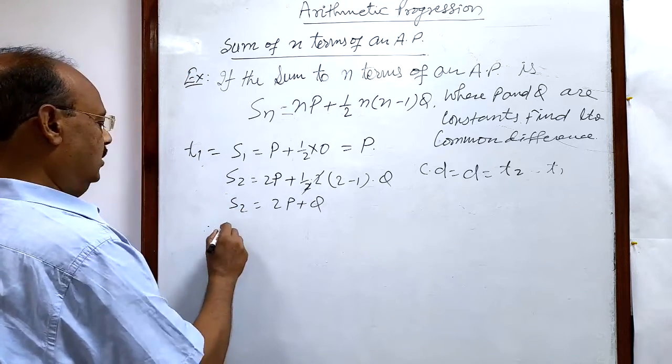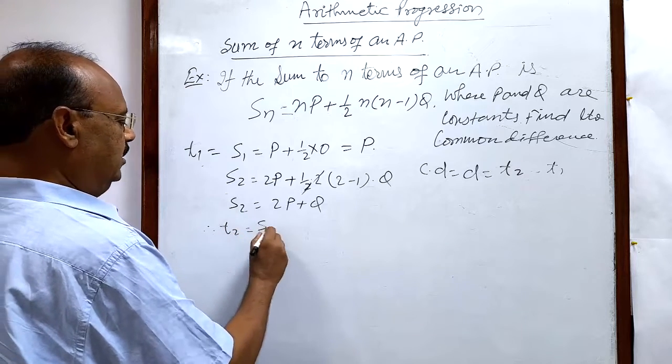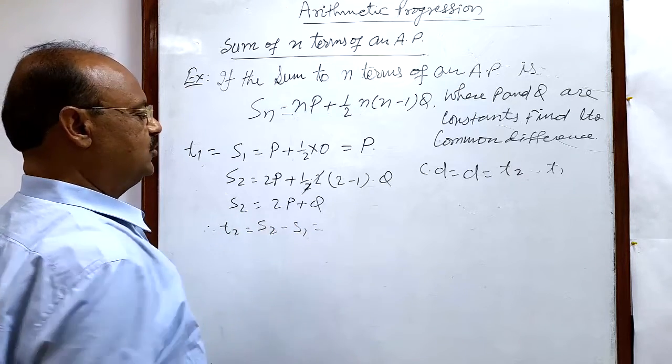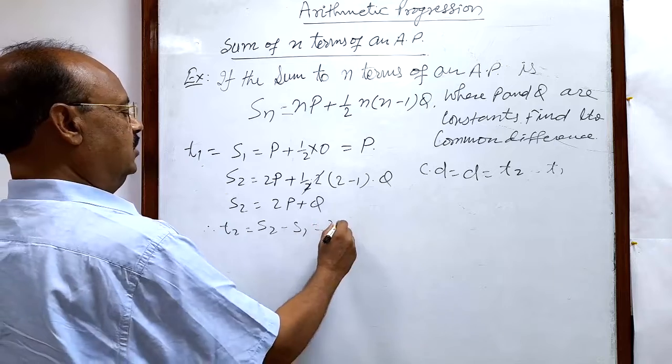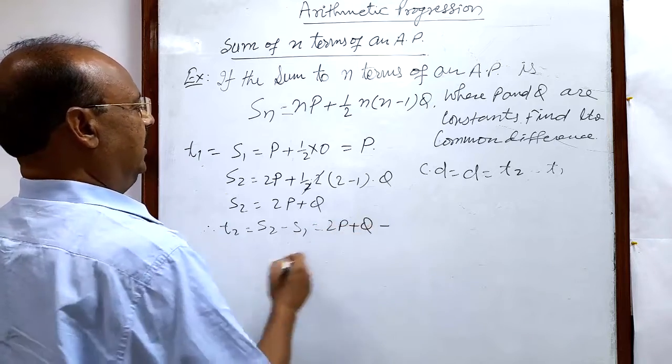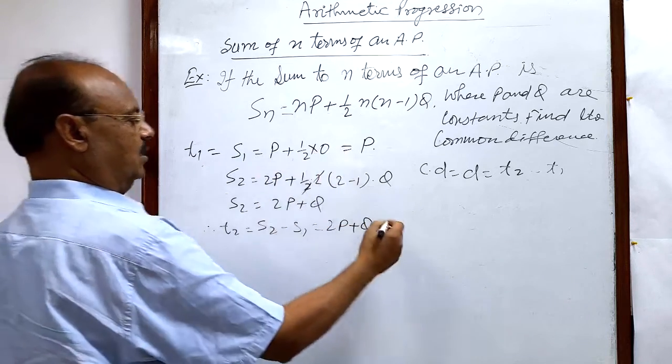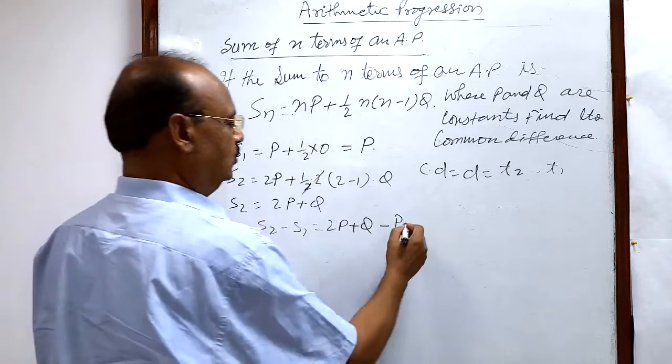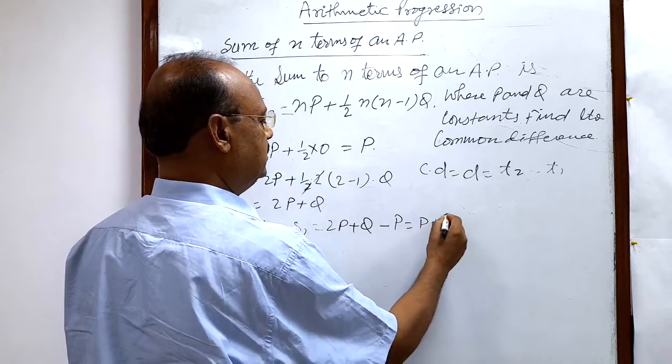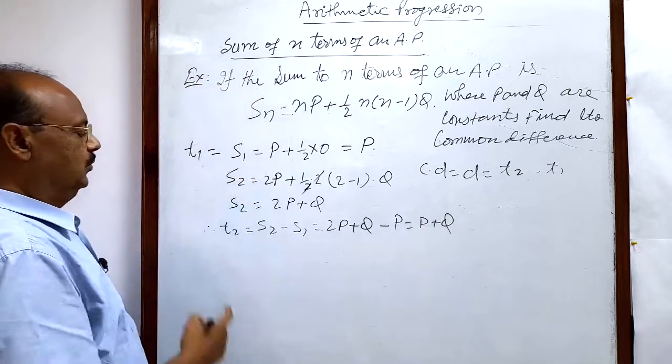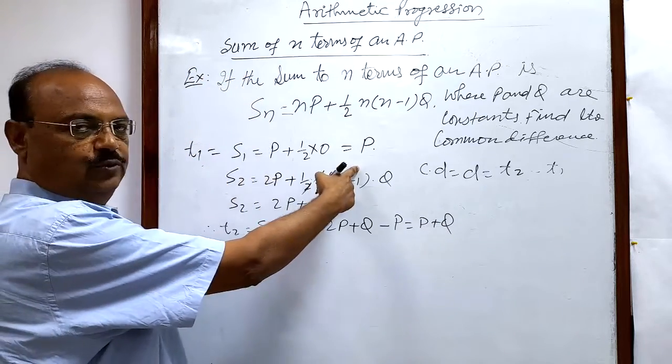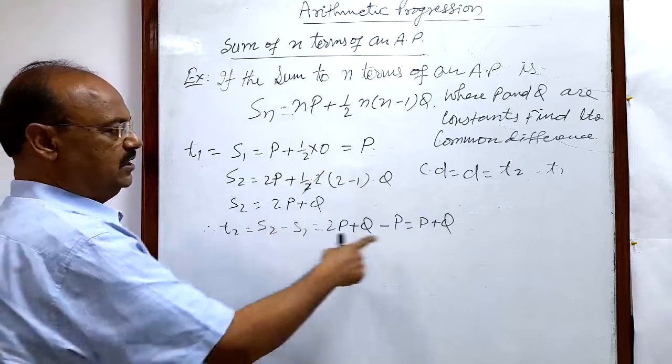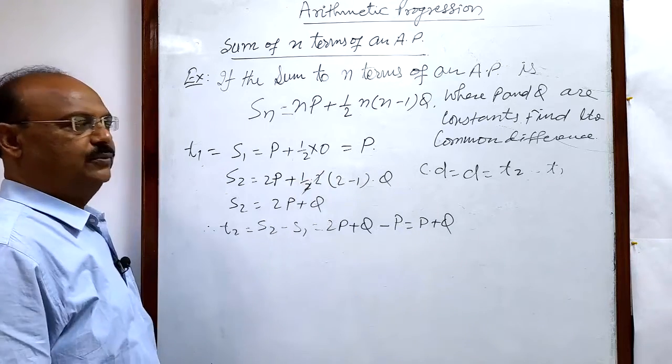So now we can get second term very easily, by s2 minus s1. So s2 is 2p plus q, and s1 is p. So this is equal to p plus q. So we are getting the value of t1 is equal to p here, and t2 is equal to p plus q.